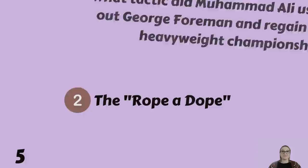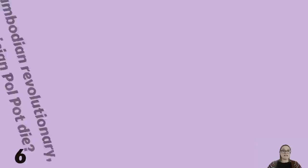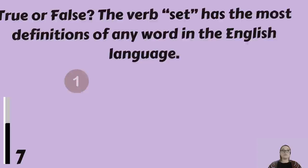When did Cambodian revolutionary, dictator, and political leader Pol Pot die? April 5th, 1998, May 19th, 1995, or July 1st, 1996? He died on April 15th, 1998.